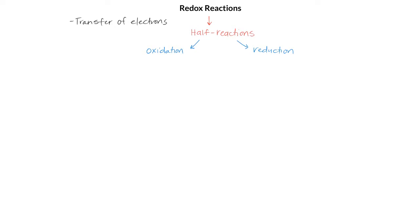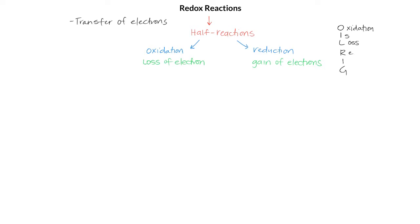The species that loses electrons is being oxidized. Oxidation is loss of electrons, and the species that is being reduced will gain electrons. You can remember this with the mnemonic device OIL RIG: oxidation is loss, reduction is gain.